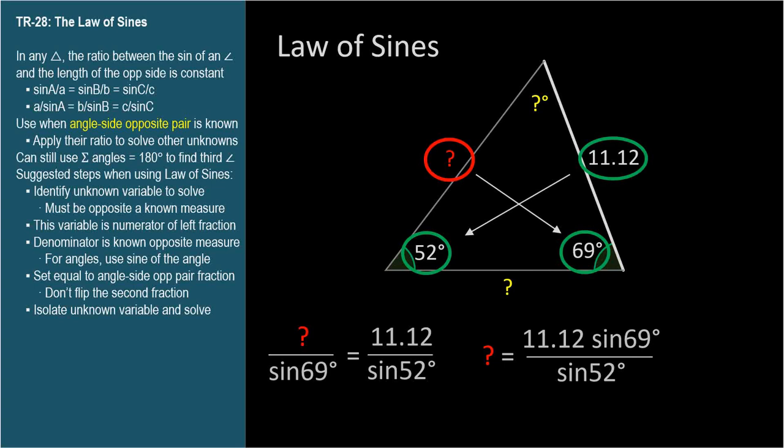With practice, you can solve this with your calculator in one step. Right fraction times denominator of left fraction. Easy. 13.17.